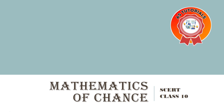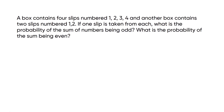Welcome back to our class. A box contains four slips numbered 1, 2, 3, and 4, and another box contains two slips numbered 1 and 2. If one slip is taken from each box, what is the probability of the sum of numbers being odd? What is the probability of the sum being even? One box has 4 number slips and the other has 2 number slips.